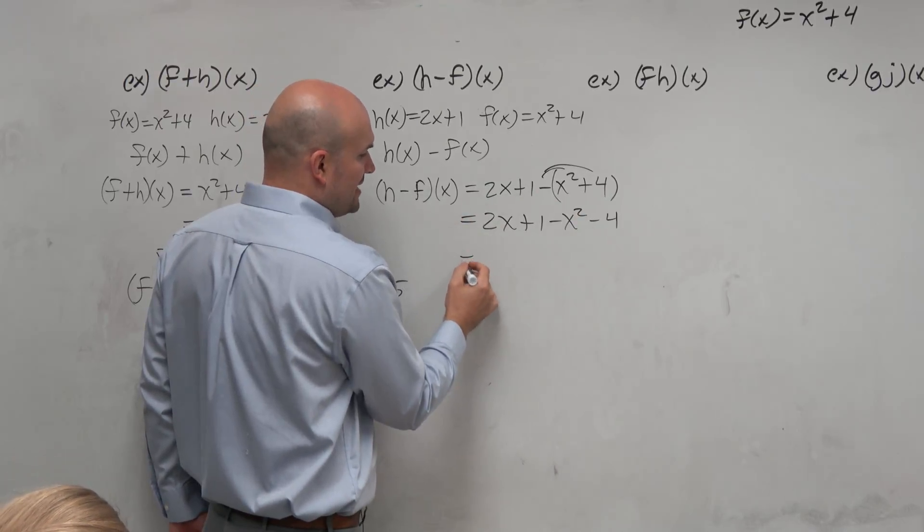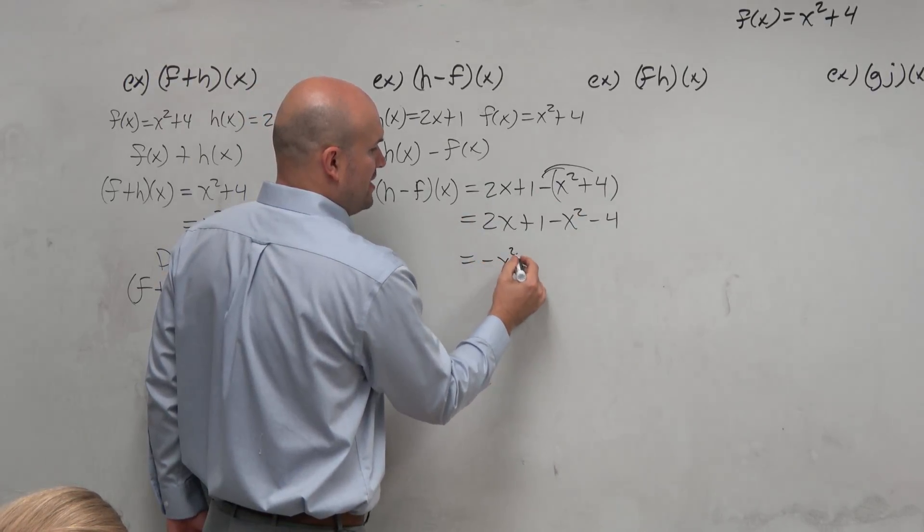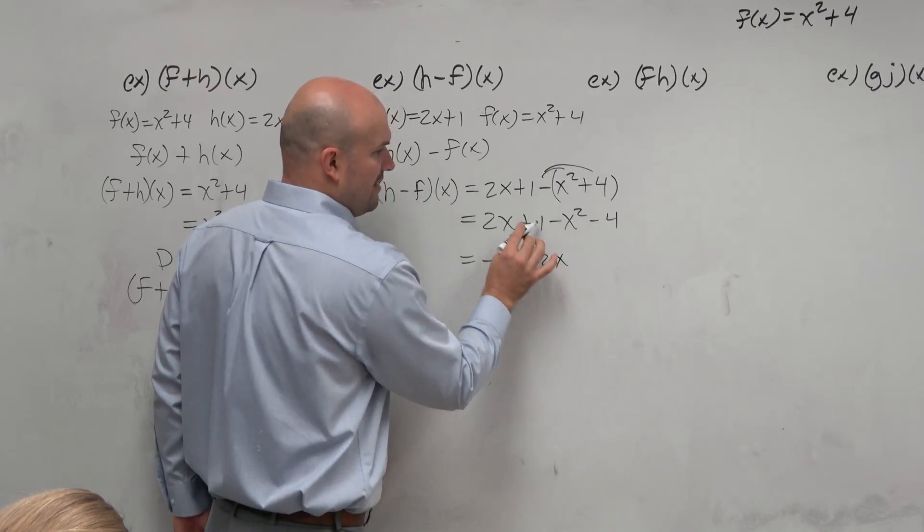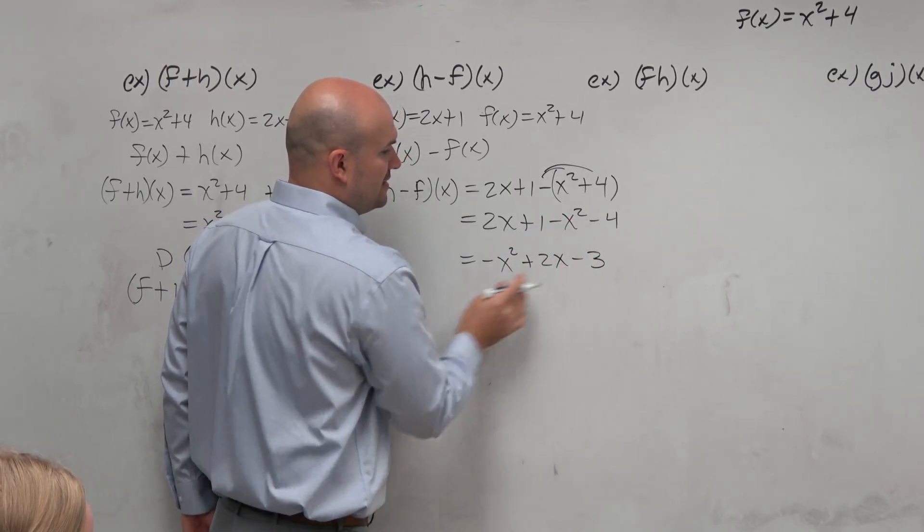Now, I can combine like terms and rewrite it in descending order. So I have a negative x squared plus 2x. And then 1 minus 4 is negative 3.